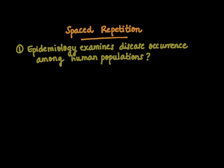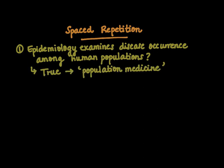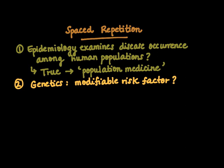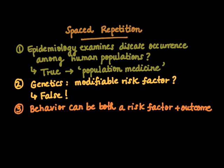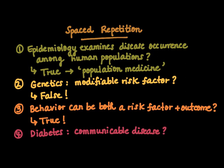Question one, true or false: epidemiology examines disease occurrence among human populations. True — many functions of epidemiology exist; overall this is known as population medicine. Question two, true or false: are your genetics a modifiable risk factor? False — you cannot change your genetics, making them non-modifiable risk factors. Question three, true or false: can behavior be both a risk factor and an outcome variable? True — as discussed in our slide on descriptive versus analytic studies, different variables can act at many different levels. And lastly, is diabetes a communicable disease? False — diabetes is a non-communicable disease; it is not of infectious origin.